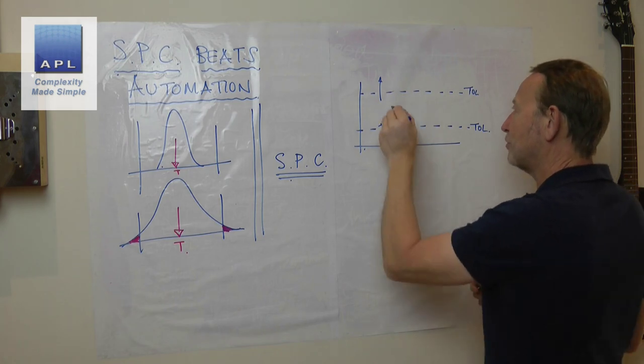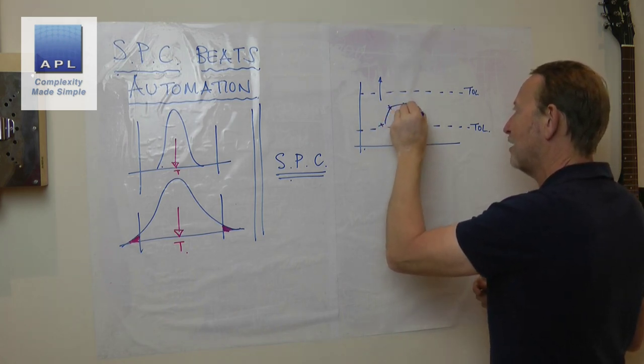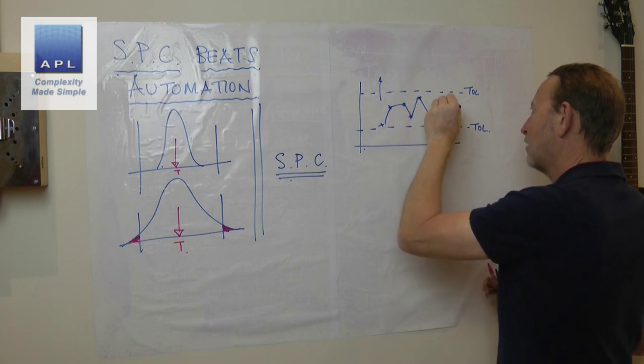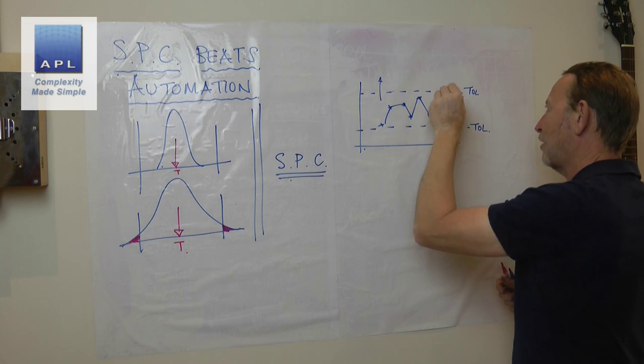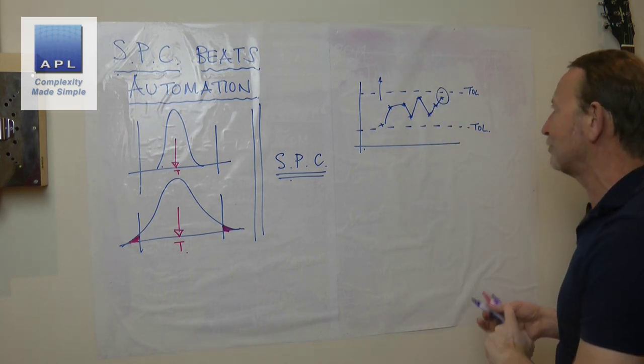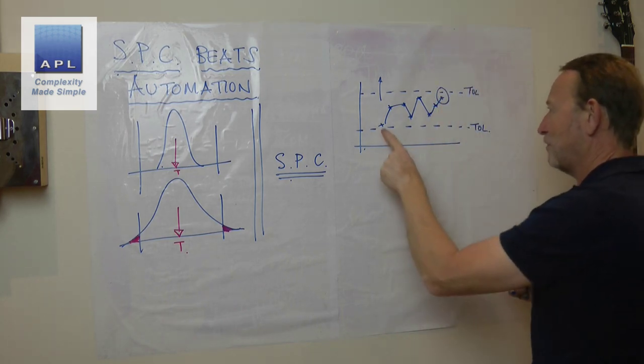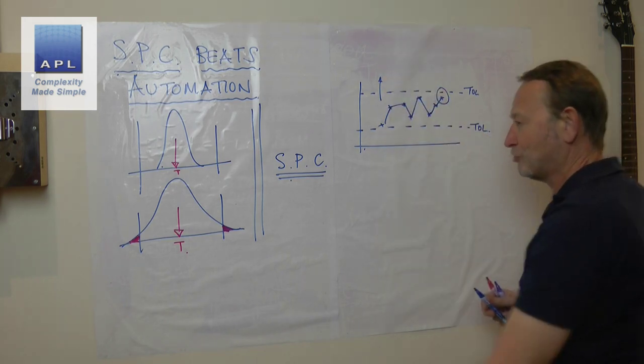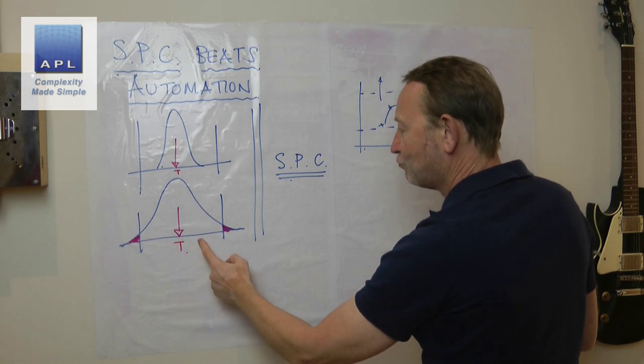When we get close to the tolerance, they'll wind the result up. So they'll look at this result, a data point at a time. When the data point gets close to the tolerance like this, they'll adjust.